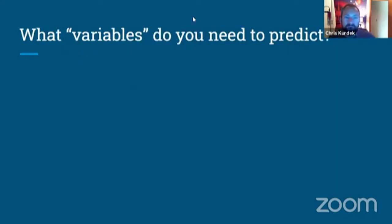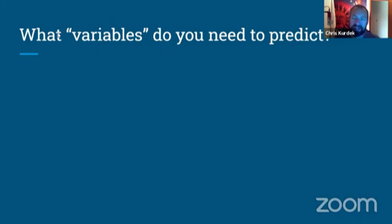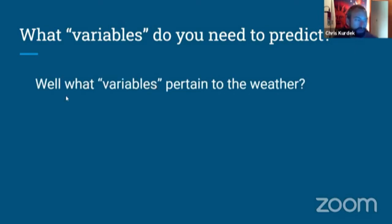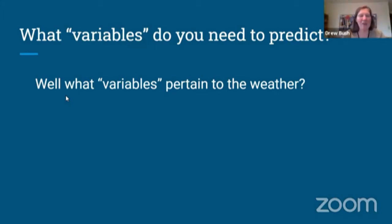The word 'variable' comes from 'vary,' meaning something that changes — the opposite of a constant. In science and math, variables mean something specific. So what variables pertain to weather? One participant said 'what's happening outside,' which is absolutely right — that's where all the weather takes place.